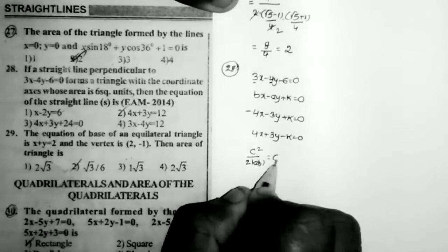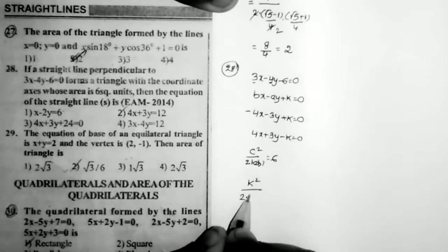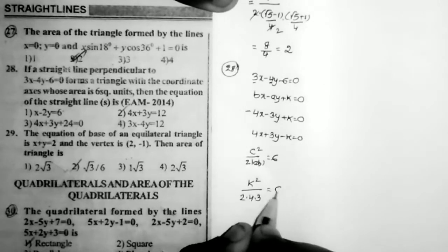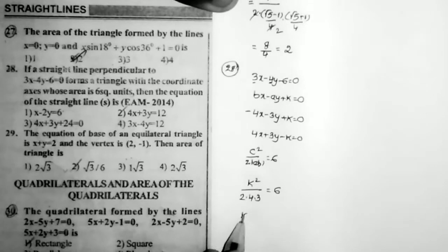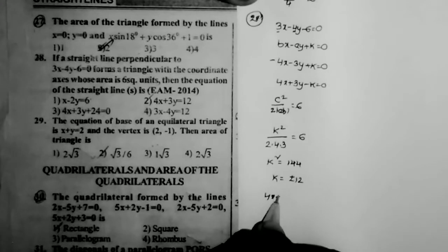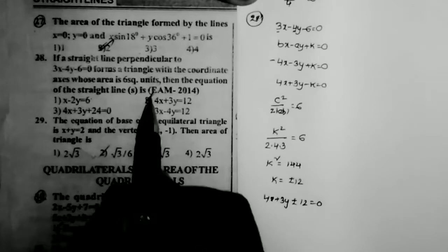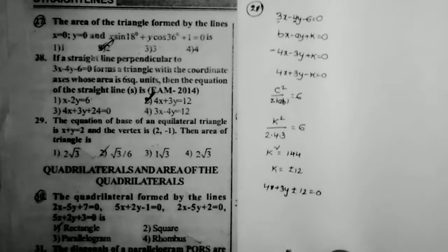Using the formula c² / (2|ab|) = 6, with c = k: k² / (2 × 4 × 3) = 6, so k² = 144, therefore k = ±12. The equation of the straight line is 4x + 3y ± 12 = 0, so the answer is 4x + 3y = 12.